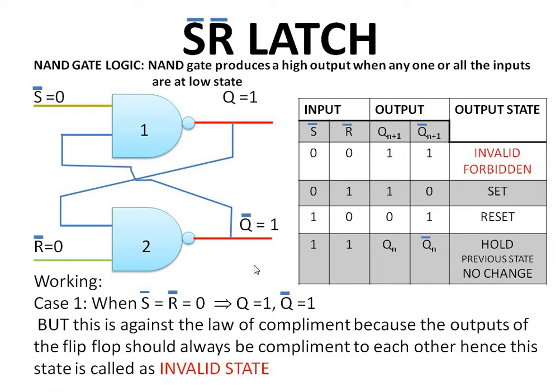This case is against the law of complement, hence it is known as an invalid state. This state has to be avoided; otherwise the circuit gets damaged. Hence, this case is also known as the forbidden state.